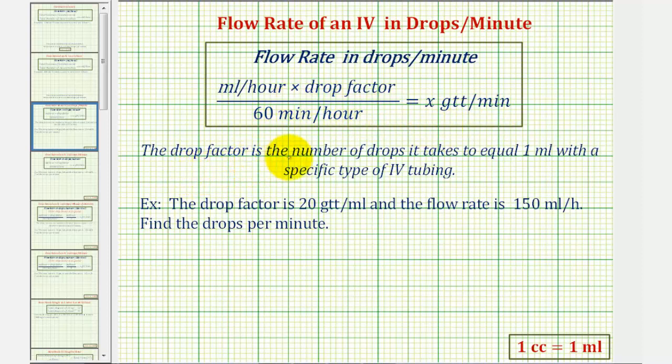And the drop factor is the number of drops it takes to equal one milliliter with a specific type of IV tubing. Before we take a look at our first example, though, I do want to show why these units work out to the drops per minute.